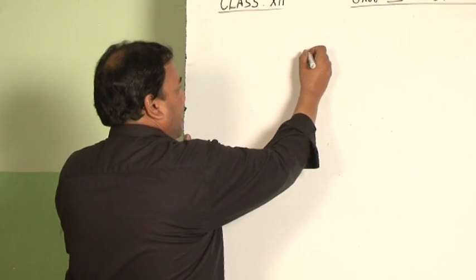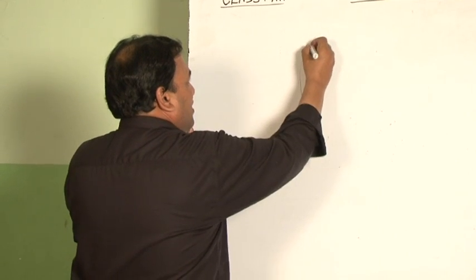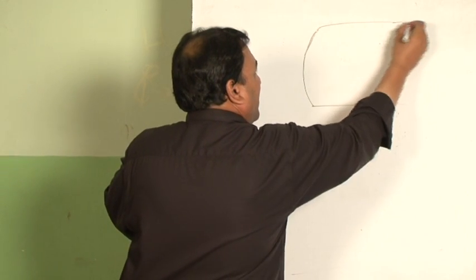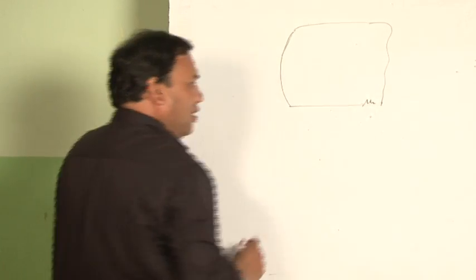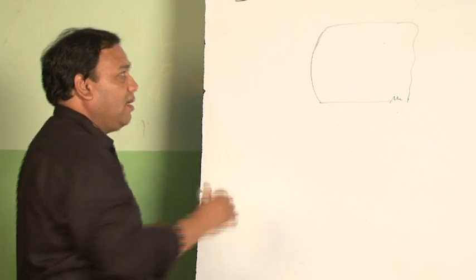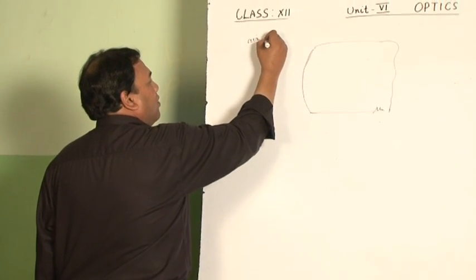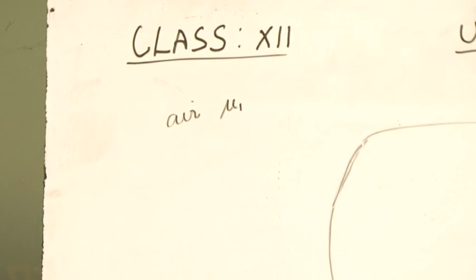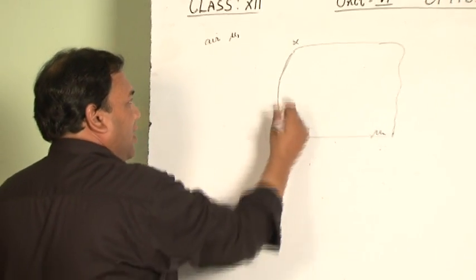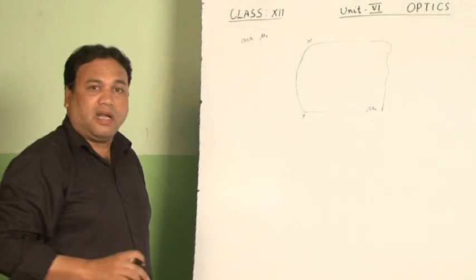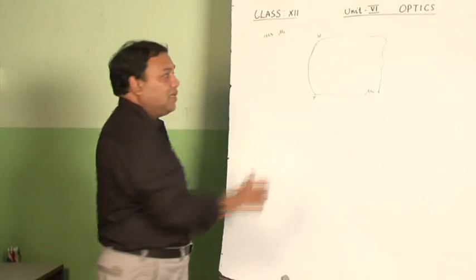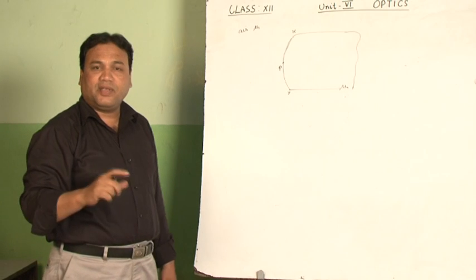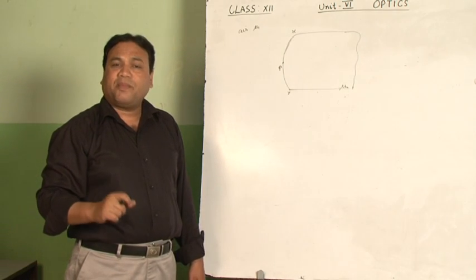For this purpose, I will take the spherical refracting surface in the form of a convex shape, made of glass with refractive index mu 2, placed in air — so the surrounding medium is air, whose refractive index is mu 1. These are the absolute refractive indices of the two media. The line XY is called the aperture. We select spherical refracting surfaces whose aperture is very small.